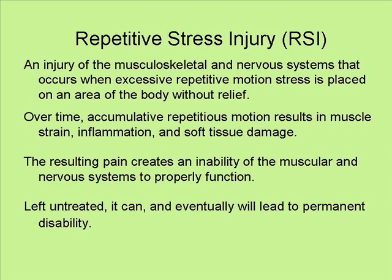Repetitive Stress Injury, RSI, is an injury of the musculoskeletal and nervous systems that occurs when excessive repetitive motion stress is placed on an area of the body without relief. Over time, accumulative repetitious motion results in muscle strain, inflammation, and soft tissue damage. The resulting pain creates an inability of the musculature and nervous systems to properly function. Left untreated, it can and eventually will lead to permanent disability.